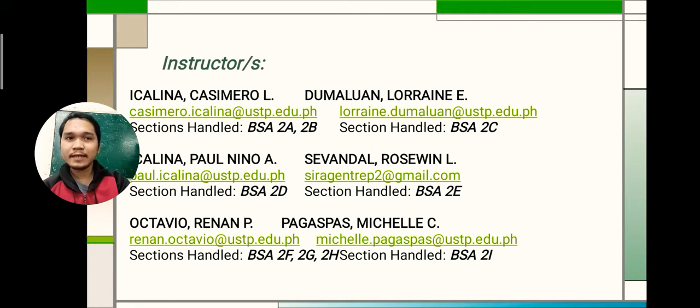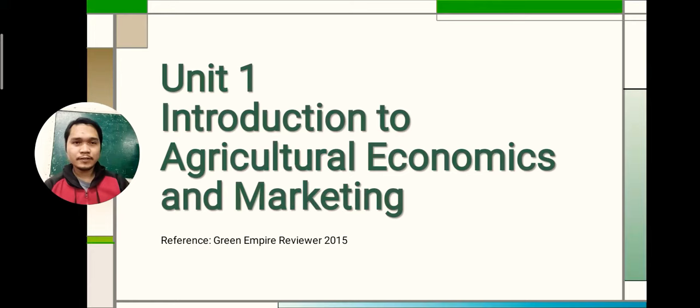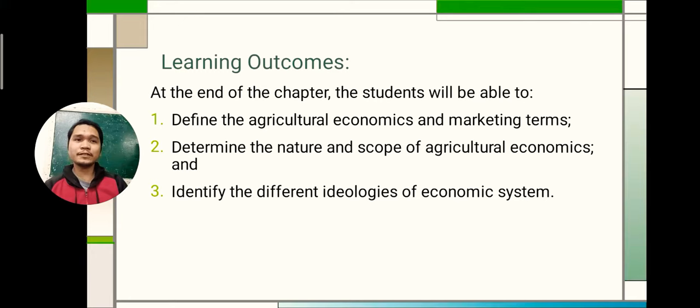Now this is the topics outline. We have six units: Unit 1 - Introduction to Agricultural Economics and Marketing; Unit 2 - Microeconomics; Unit 3 - Macroeconomics; Unit 4 - Agricultural and Economic Growth; Unit 5 - International Economics; and Unit 6 - Agricultural Marketing. We will now discuss Unit 1. At the end of the chapter you will be able to define agricultural economics and marketing terms, determine the nature and scope of agricultural economics, and identify the different ideologies or theories of economic systems.